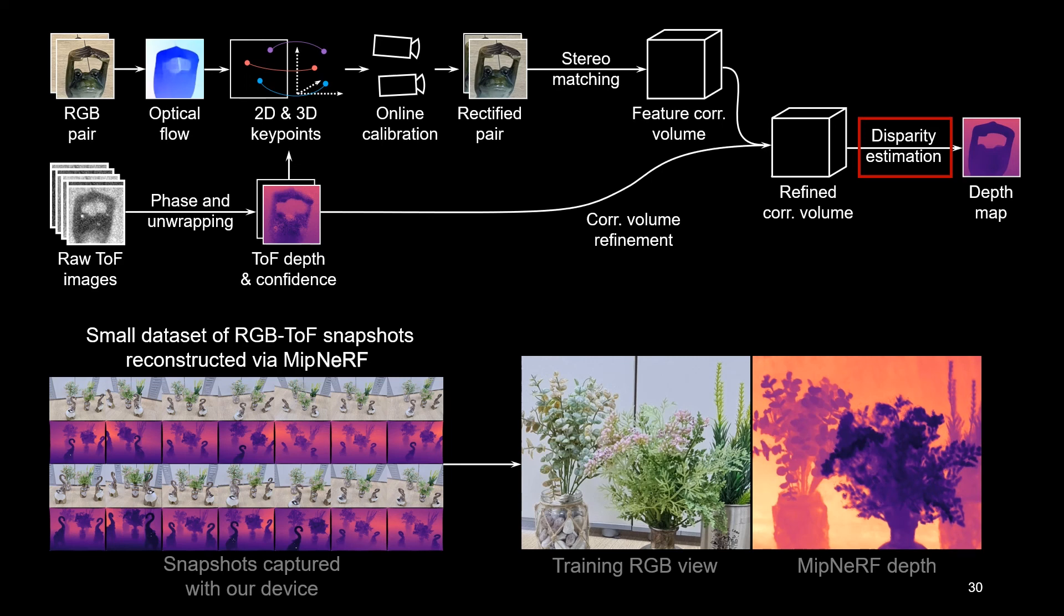Instead, we build a small multi-view dataset from RGB ToF snapshots captured with our smartphone. Then we reconstruct the scenes with the neural reconstruction method MipNeRF. From the reconstructions, we render depth from the pose of our reference camera and use it to supervise our disparity maps. This has no domain gap and shows the exact noise profile of our sensors.